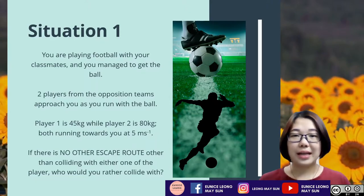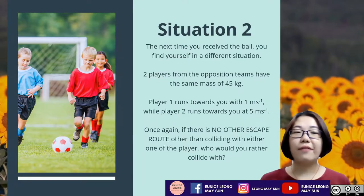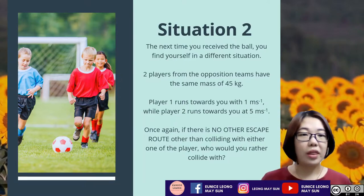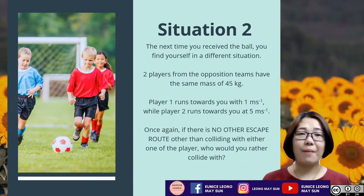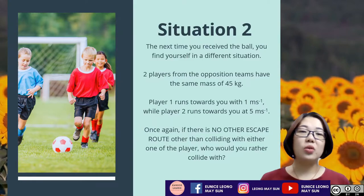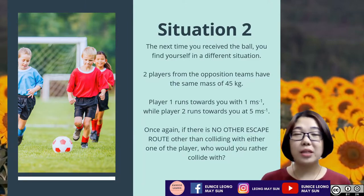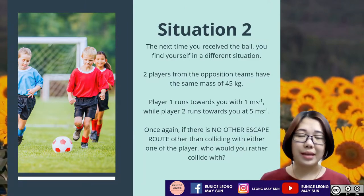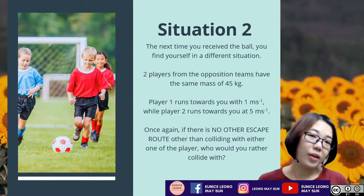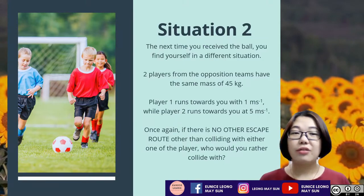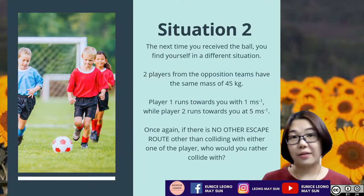But why is that? In the second situation, the next time you receive the ball, you find yourself in a different situation. Two players from the opposition team have the same mass of 45 kg, roughly the same figure. But player one is running towards you at 1 meter per second — that's quite slow — while player two is running towards you at 5 meters per second, which is very fast. So once again, if there is no other escape route other than colliding with one of them, who would you rather collide with? You would rather collide with someone slower because colliding with someone slower, you will feel less of the impact.